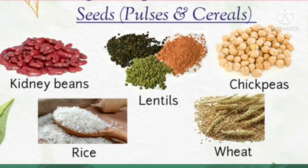Dear children, we eat seeds in the form of pulses and cereals. You can see kidney beans, also known as rajma. Pulses include moong, urad, chana, etc. Chickpeas are grains eaten in the form of seeds. Further examples include rice, wheat, and maize, which are also examples of seeds.